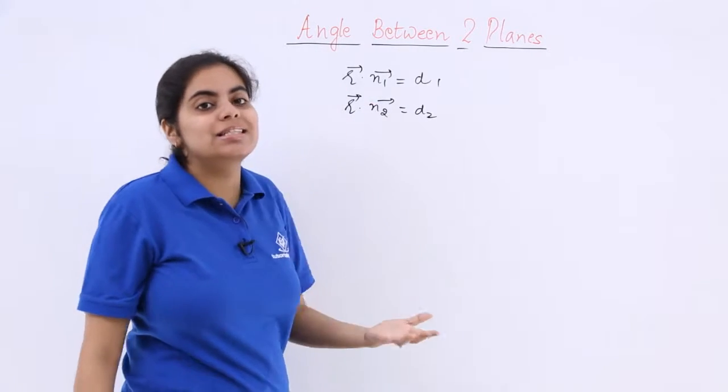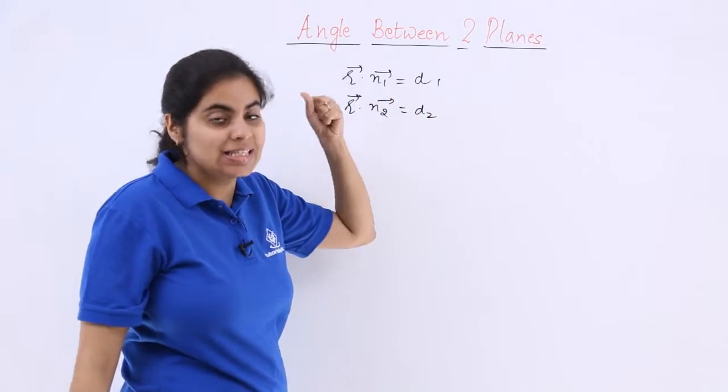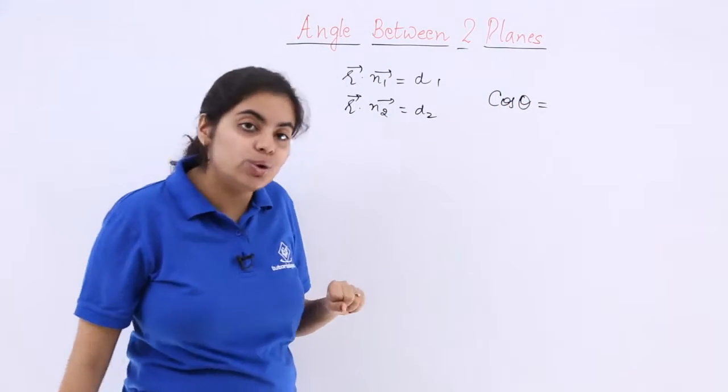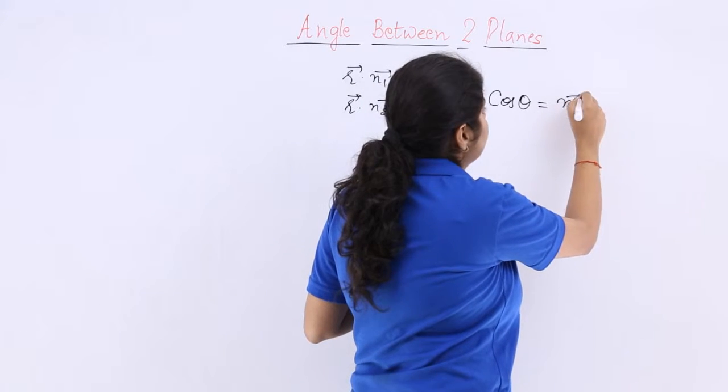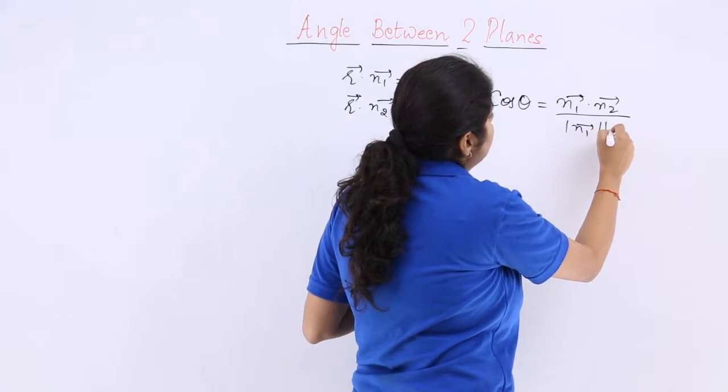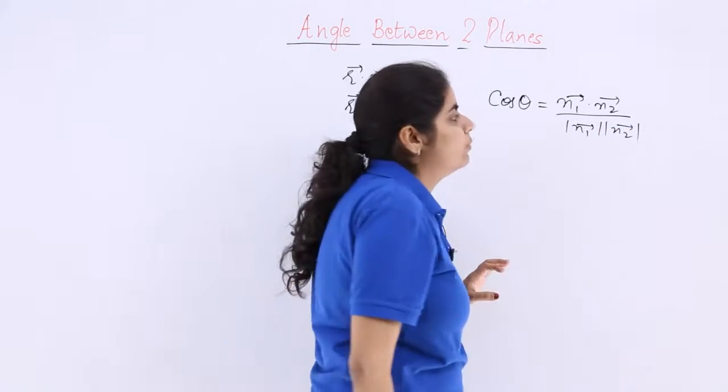what is actually the distance between these planes? The distance between these planes is given by cos theta is equal to n1 vector dot n2 vector whole over the modulus of n1 dot n2 in the product.